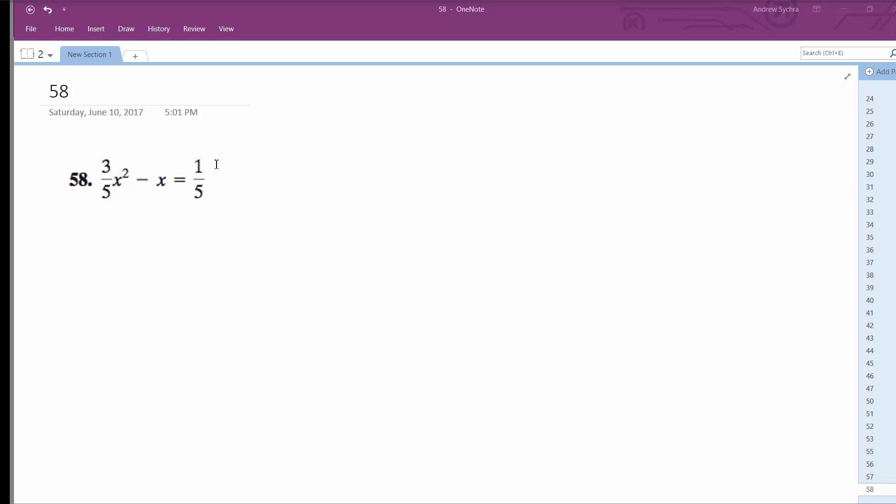I want to solve this problem. I'm using a quadratic formula, but what I'm gonna do is move everything over to the left. That way I can define a, b, and c. So I get 3/5 x squared minus x minus 1/5 equals 0.